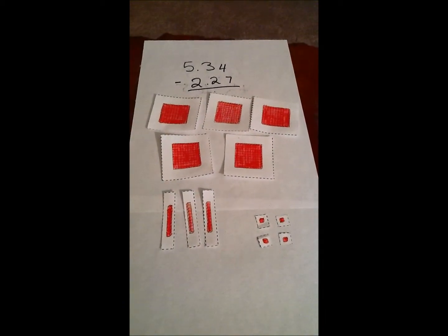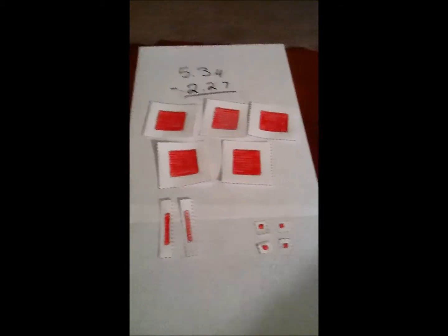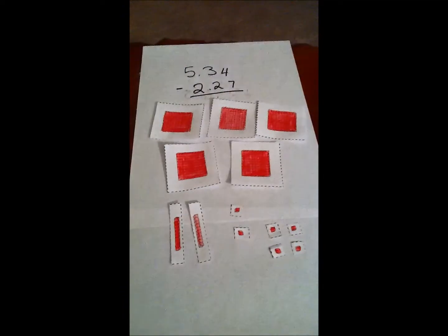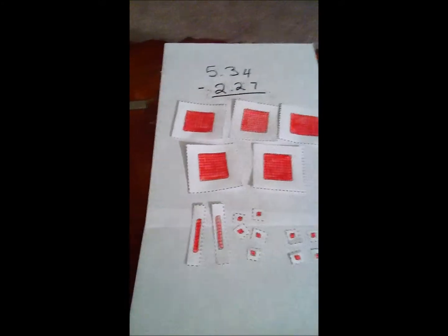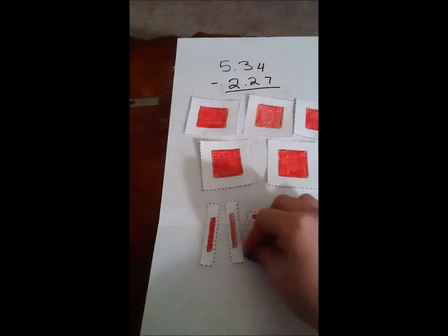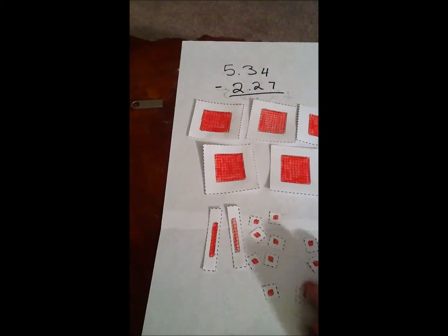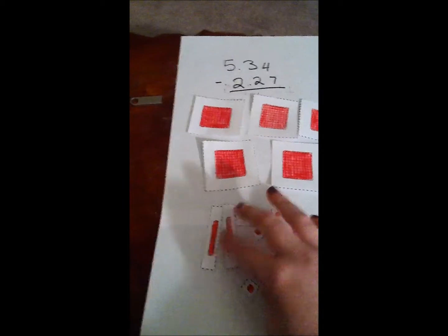In order to take 7 away from 4, we're going to have to trade in one of the longs for 10 units. So, 1, 2, 3, 4, 5, 6, 7, 8, 9, 10.